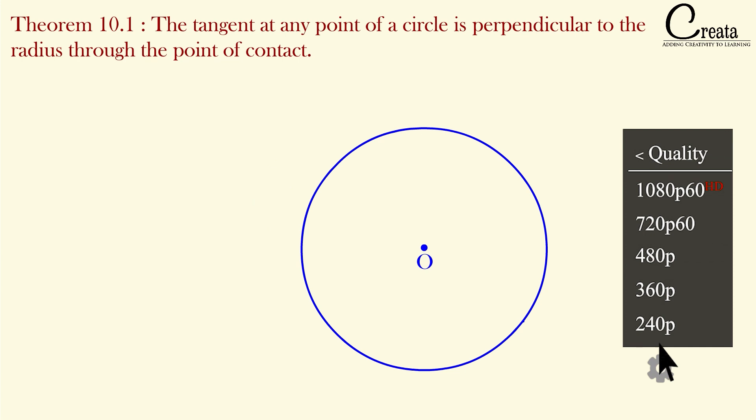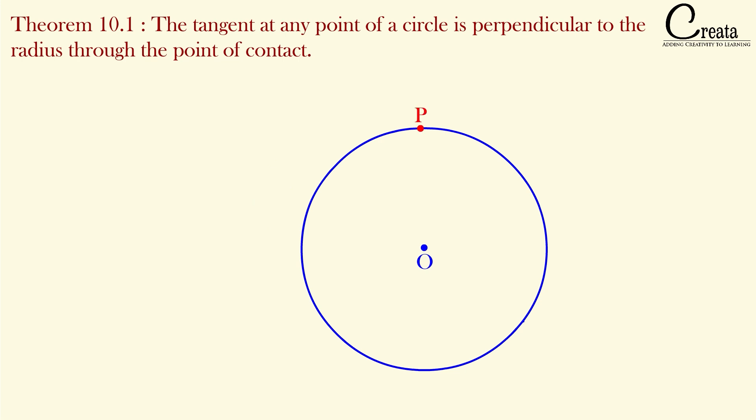Let's take this circle and take point P on the circumference of the circle. In the previous lecture we learned that for any point on the circumference, we can have only one tangent. All other lines except the tangent will be secants.